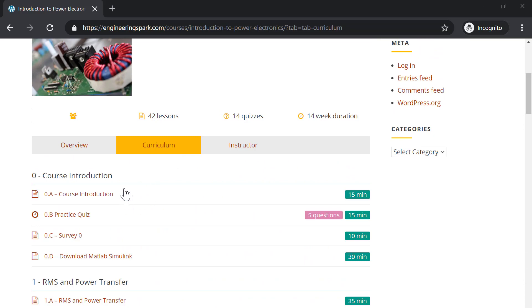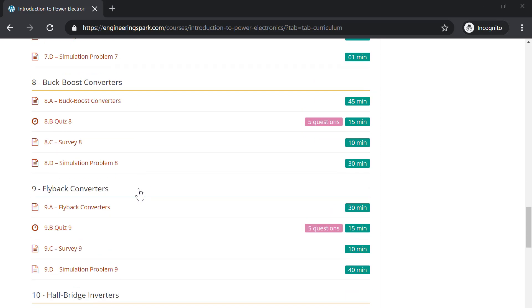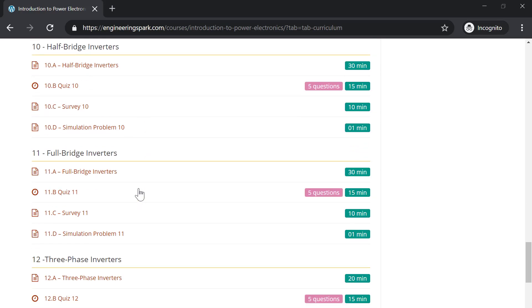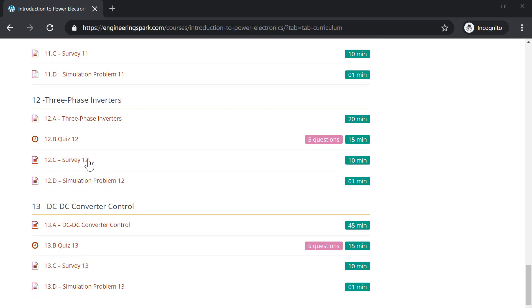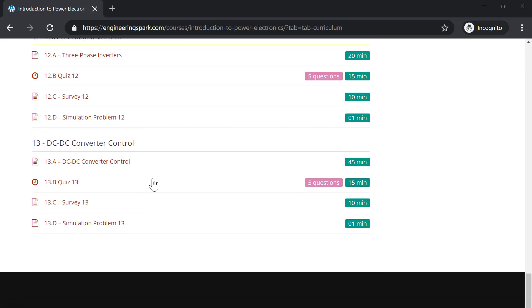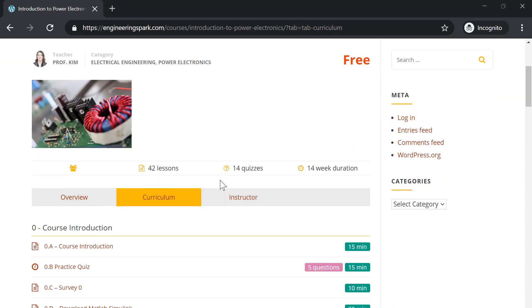And to get a sense for the weeks, you can go here. And it just shows you all the different lessons from 0 to 13 going through all these different topics. I've organized it so it's the videos, quiz, optional survey that just helps with research, and then a simulation problem in MATLAB Simulink. So you can go through those. Everything is free. Since there's no login, you won't have a record of it, but you can access all the content for free. So that's it. Thank you.